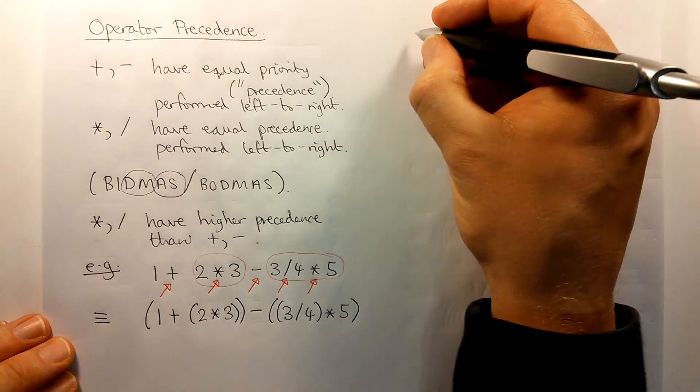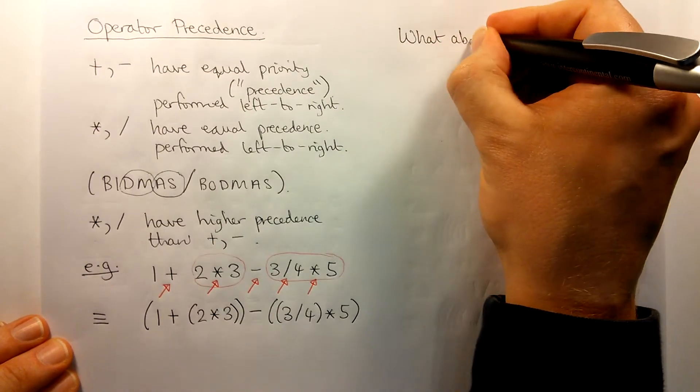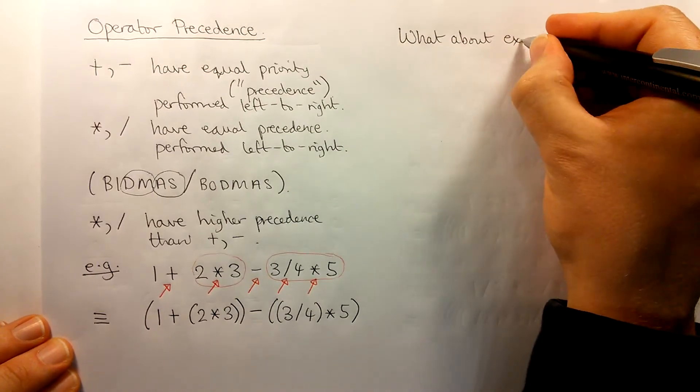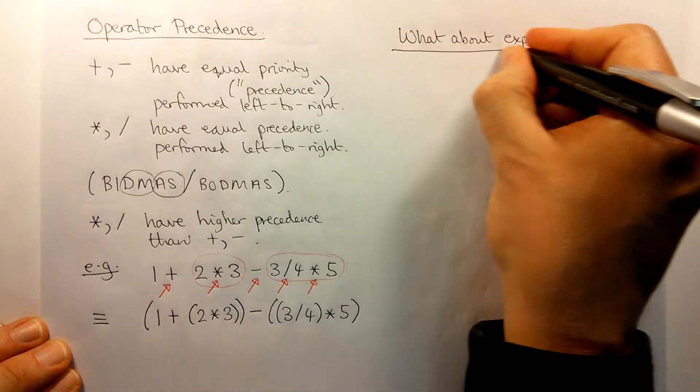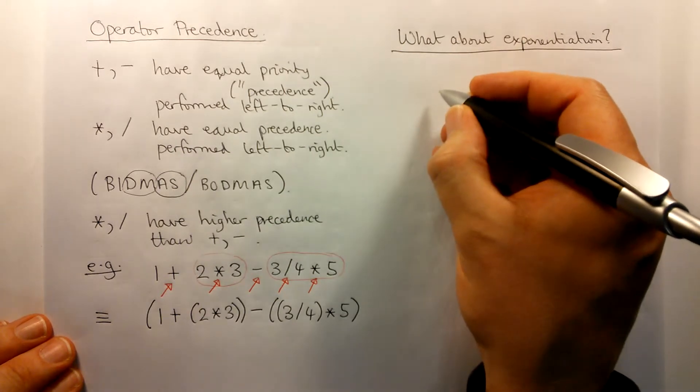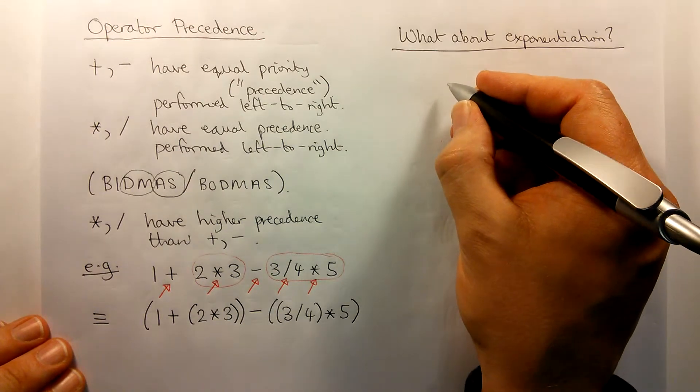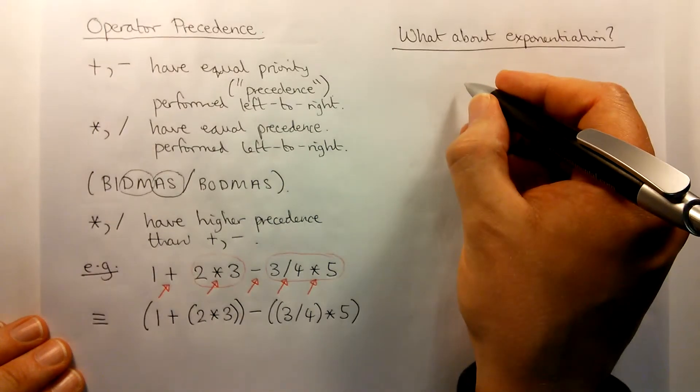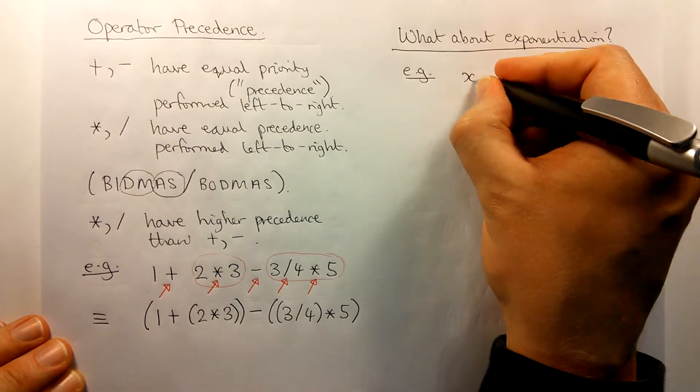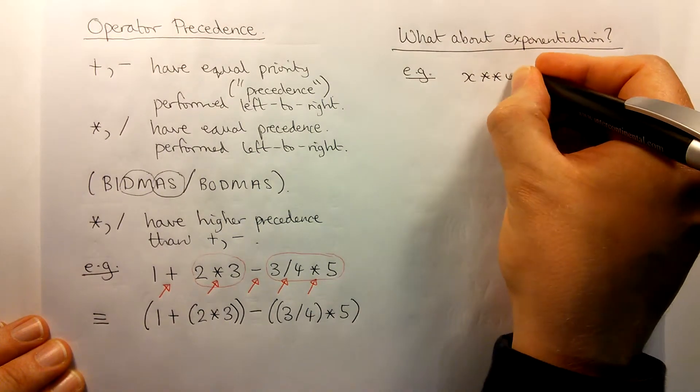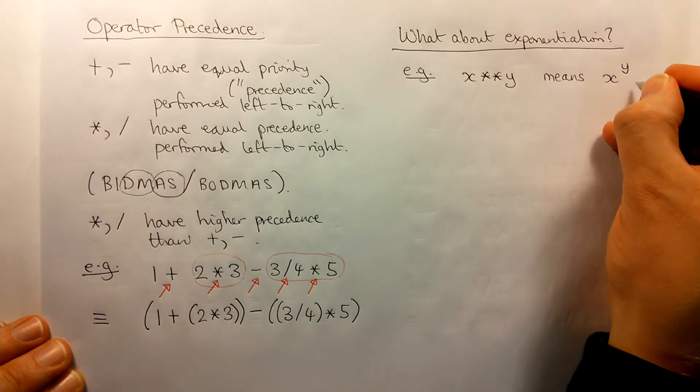So there's one important operation that we use a great deal in arithmetic that we haven't talked about yet, and that's exponentiation. So the first thing we should do in talking about exponentiation is to figure out is it left or right associative. Do we perform exponentiation left to right or right to left? So let me just remind you what exponentiation is. In Python, this is x star star y, which means mathematically x to the power y.